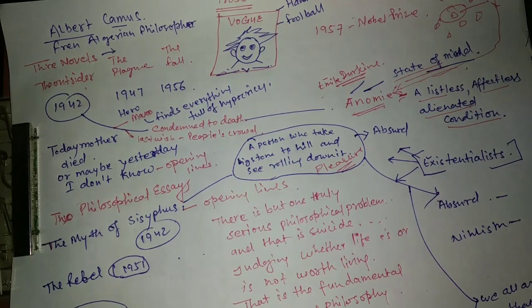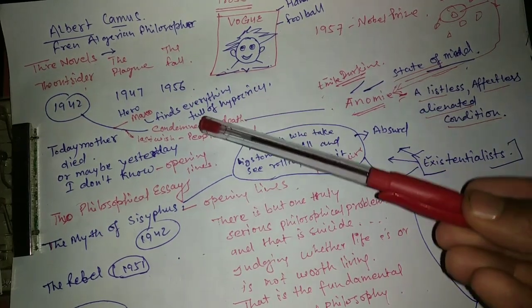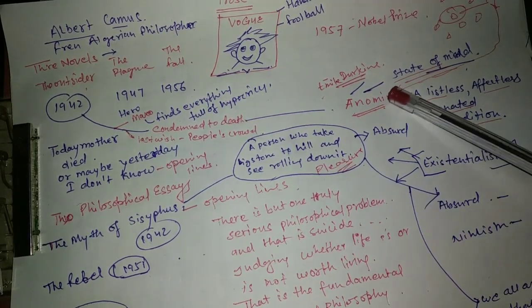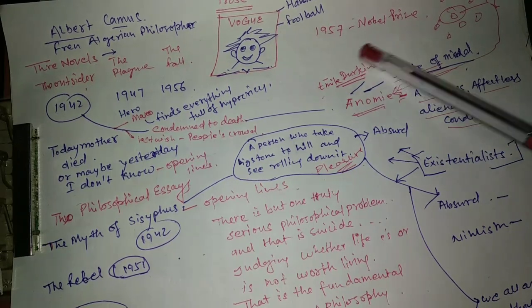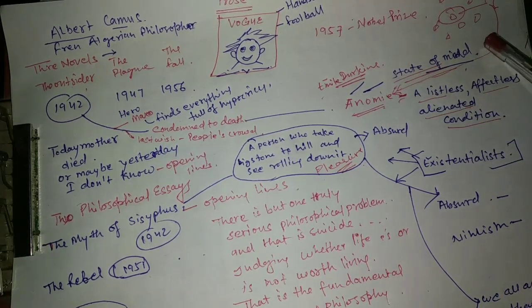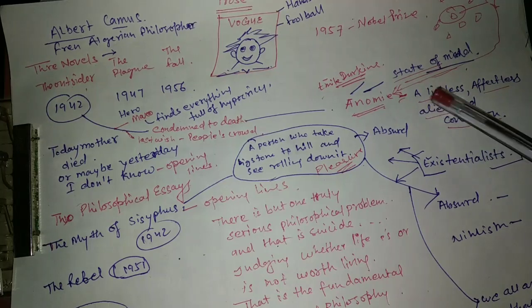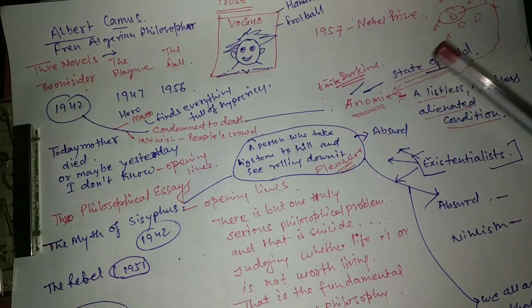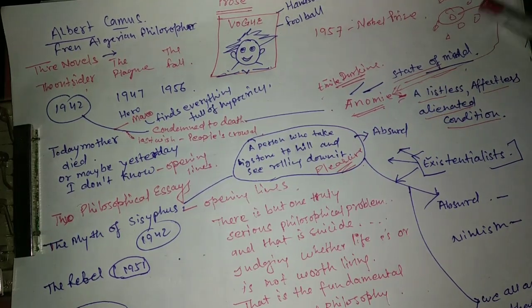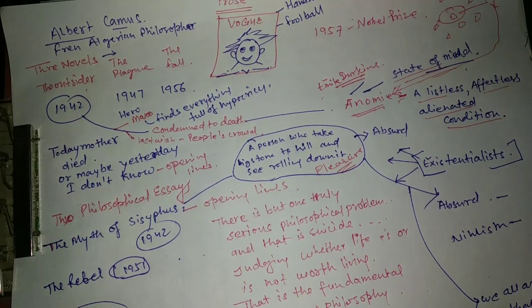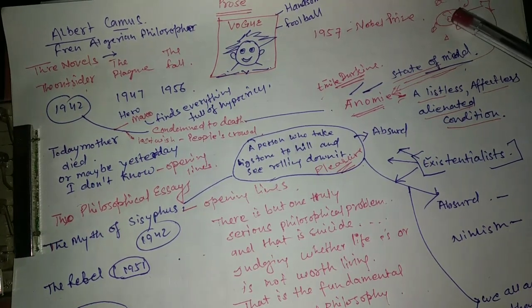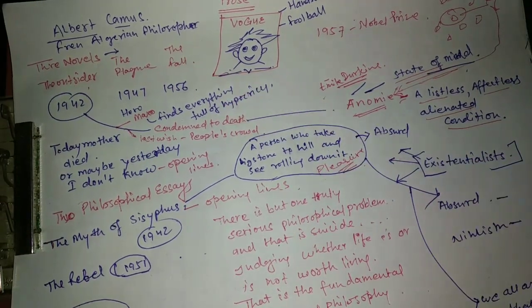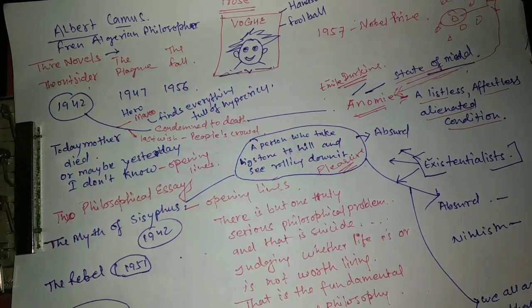If you don't know about this video, you can see the outsider in this work, which is related to anomie. Emile Durkheim has this term which is a state of mind which is listless, affectless and alienated. That means that you are sitting with someone but you are not affected, that means that you are completely different, which is the condition of Maxo. Maxo looks at society and thinks that it is full of hypocrisy.